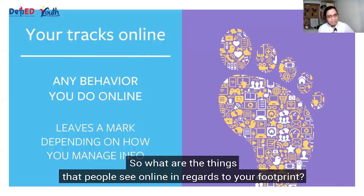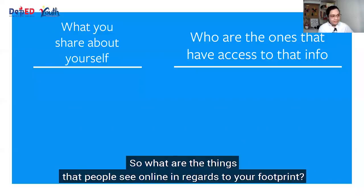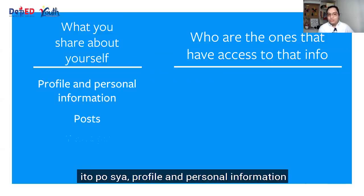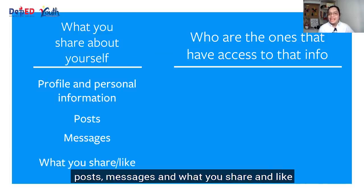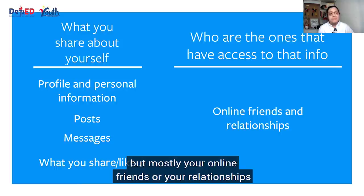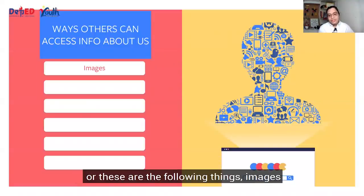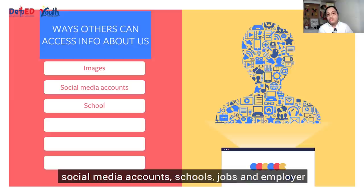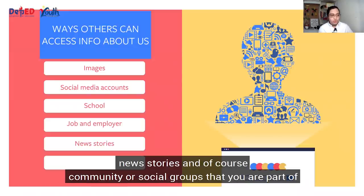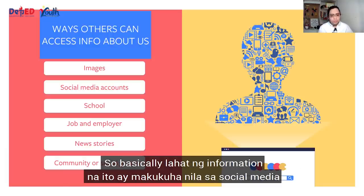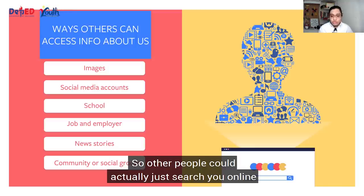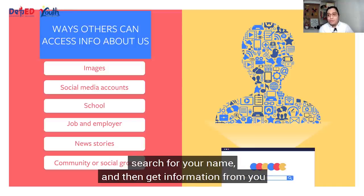Any online behavior that you do will leave an impression on other people, and other people have access to this as well. So depending on how you manage your account, marami po ang makakakita ng mga behavior na ito. What are the things that people see online in regards to your footprint? Profile and personal information, posts, messages, and what you share and like — and those who could see depends on your privacy settings, mostly your online friends. From these things, they could get the following information: images, social media accounts, schools, jobs and employer, news and stories, and community or social groups that you are a part of.